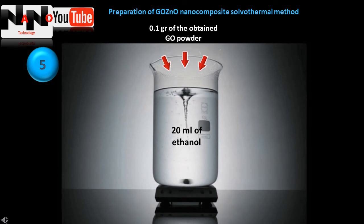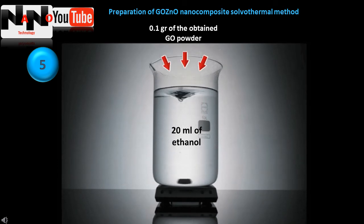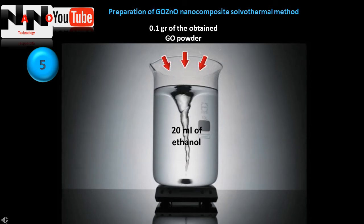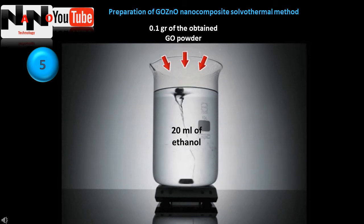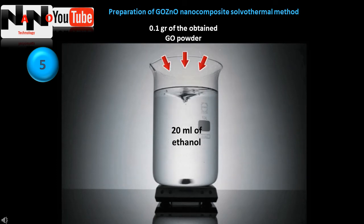To prepare the graphene oxide zinc oxide nanocomposite, the solvothermal method is used. For this purpose, 0.1 gram of the obtained graphene oxide powder is dispersed in 20 milliliters of ethanol and mixed homogeneously using an ultrasonic bath for one hour at room temperature.